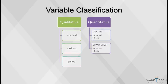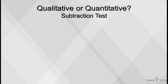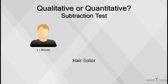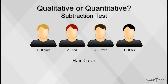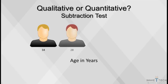The best way to decide whether a variable is qualitative or quantitative is to use the subtraction test. If two experimental units have different values for a particular measure, subtract the two values and ask yourself about the meaning of the difference. For example, when hair color is coded as 1 equals blonde, 2 equals red, 3 equals brown, and 4 equals black, the difference between the variables has no meaning — it fails the subtraction test, so hair color is a categorical or qualitative variable. However, if the difference is meaningful, such as age in years, then it is a quantitative variable.